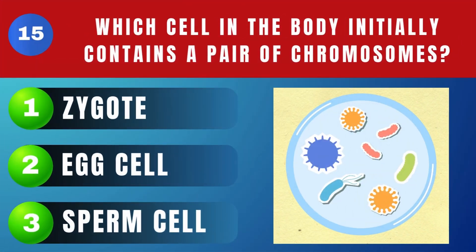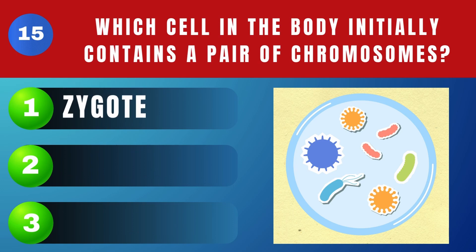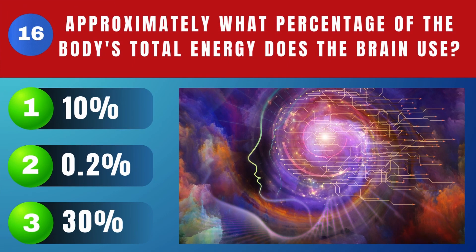Which cell in the body initially contains a pair of chromosomes? Zygote. Approximately what percentage of the body's total energy does the brain use? Around 0.2%.